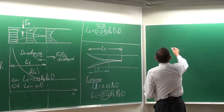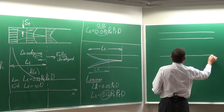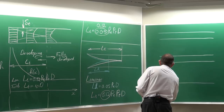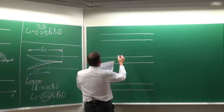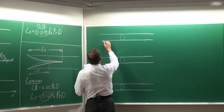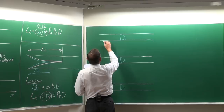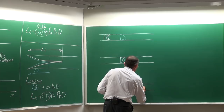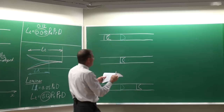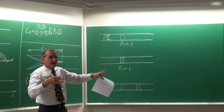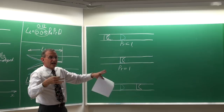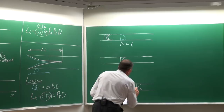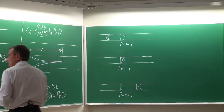The diagram I showed has the velocity boundary layer developing before the thermal one, but that is not always the case — there can be three cases. The Prandtl number determines which boundary layer is fully developed first. If the Prandtl number is less than one, the thermal boundary layer is fully developed first. If the Prandtl number equals one, both develop together. If the Prandtl number is greater than one, the thermal boundary layer takes longer to develop.